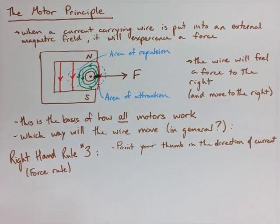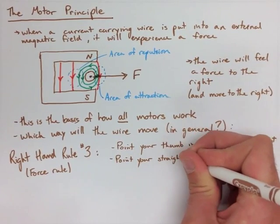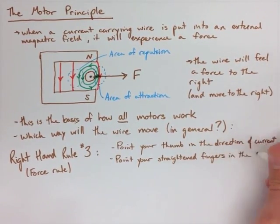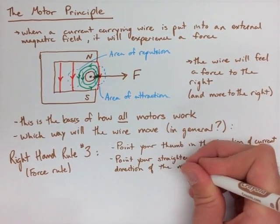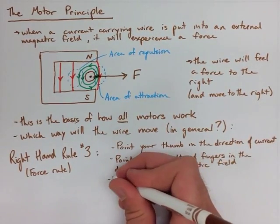And we're going to point those straightened fingers in the direction of the magnetic field. So that means from north to the south. So we're pointing our straightened fingers to the south end of that magnet. Now what this creates is our palm facing the direction of the force.